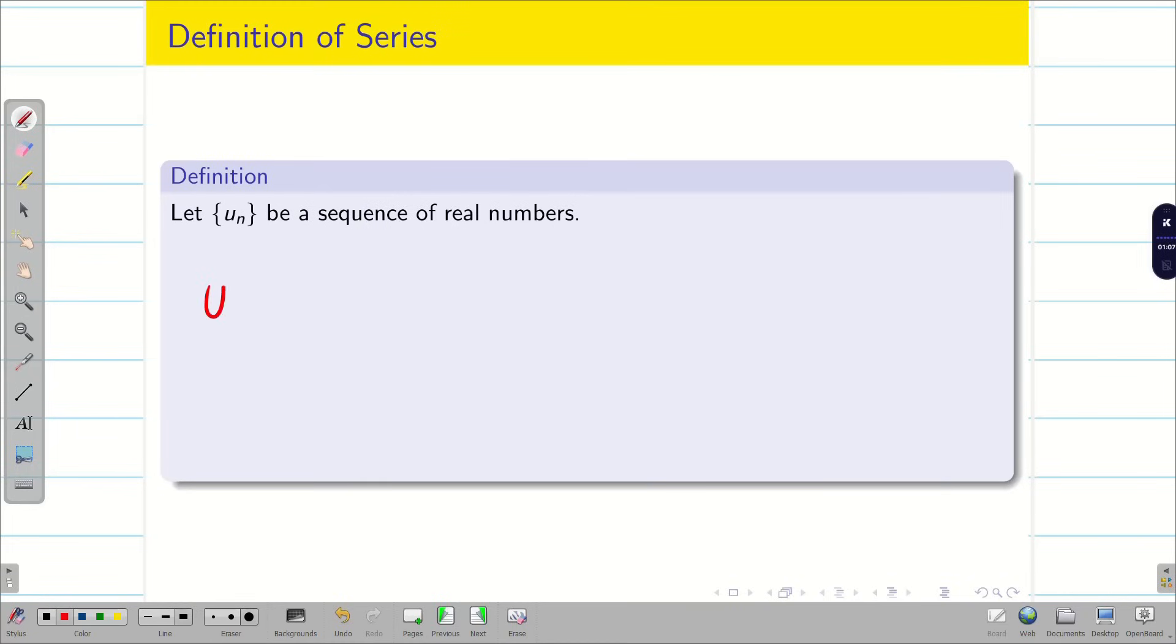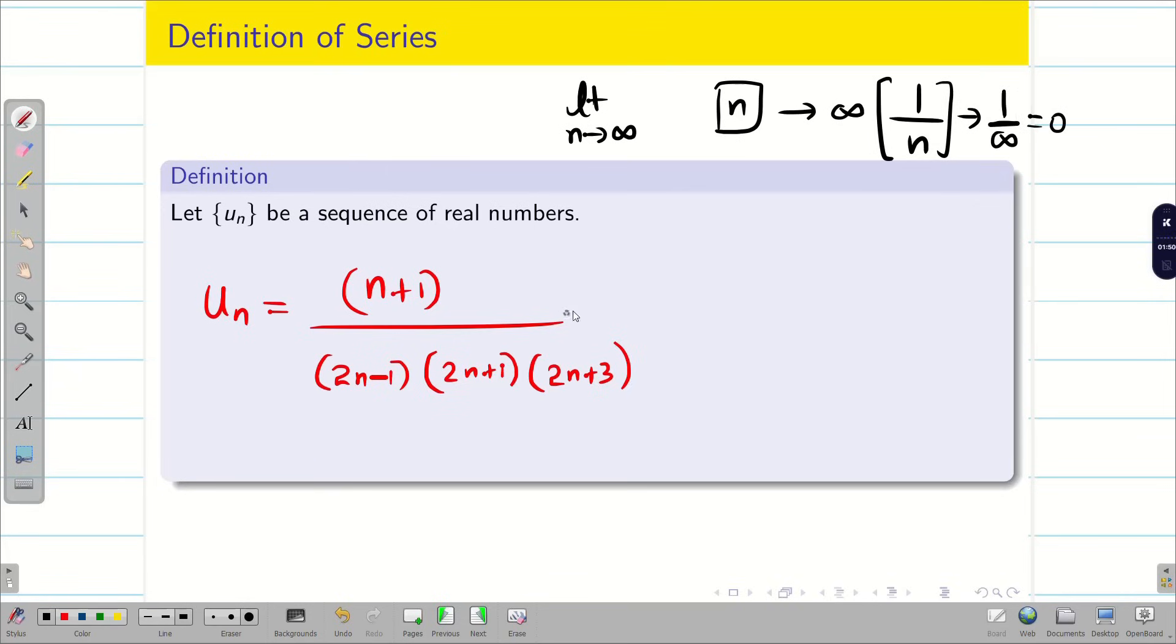Next, we are going to learn one more basic. Suppose we have an nth term. For example, n plus 1 divided by 2n minus 1, 2n plus 1, and 2n plus 3. Most of the cases, I am going to apply limit n tends to infinity. So, if I have n, then the problem will go to infinity. Suppose I make the problem such that I will take n outside and cancel. If I bring in 1 by n, even if I put infinity, it will become 1 by infinity, that is 0.